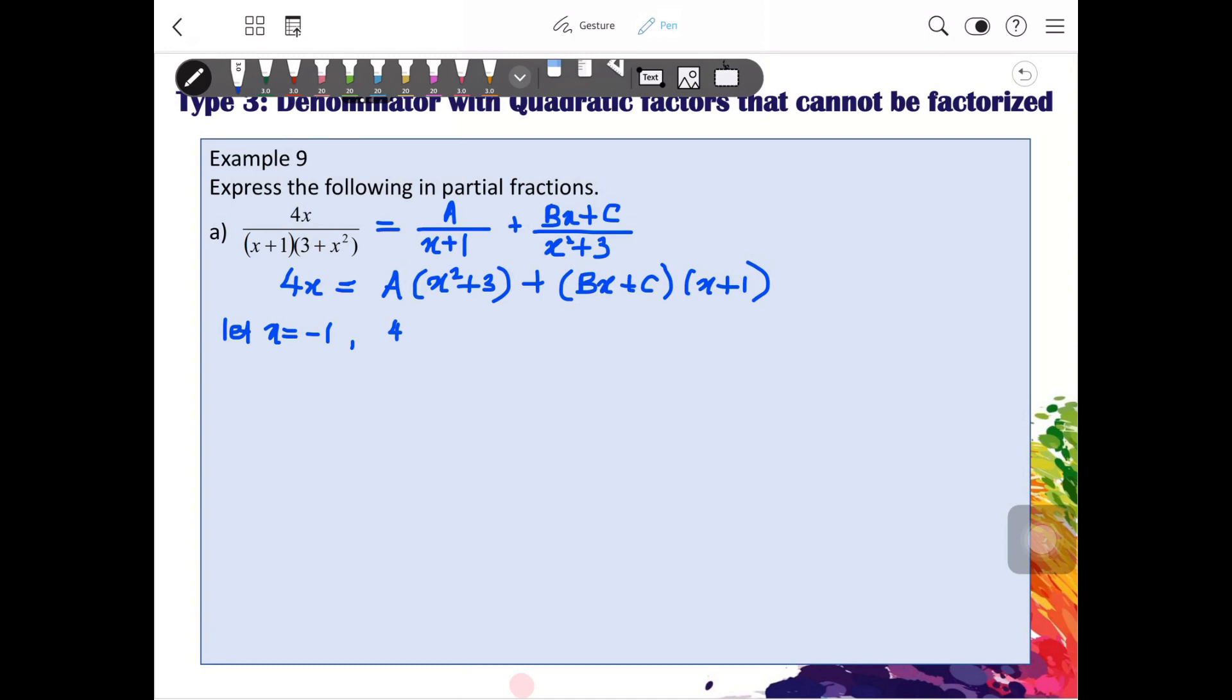We will have 4 times negative 1 equals to A times negative 1 squared plus 3. So we have negative 4 is equal to 4A, A is negative 1.